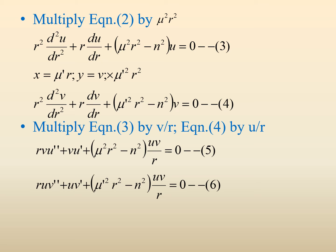Similarly, substituting x = μ'r and u = v, then multiplying by μ'²r gives r²(d²v/dr²) + r(dv/dr) + (μ'²r² − n²)v = 0. We label these as equations 3 and 4.